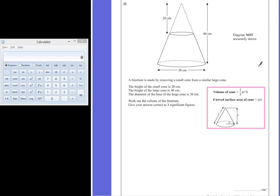To work out the volume of the frustum, we need the volume of the larger cone and the volume of the smaller cone. You're given a formula for volume of a cone in the front of your exam papers: 1/3 π r² multiplied by height.